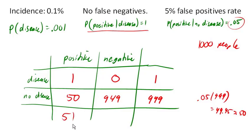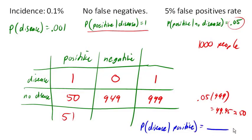What we're really interested in is: what is the probability that you have the disease given that you tested positive? How many people tested positive? 51. How many of them actually have the disease? 1. That comes out to about 1.96%. So remarkably, even though this test has no false negatives and only a 5% false positive rate, if you test positive for this disease, there's only about a 2% chance that you actually have it.